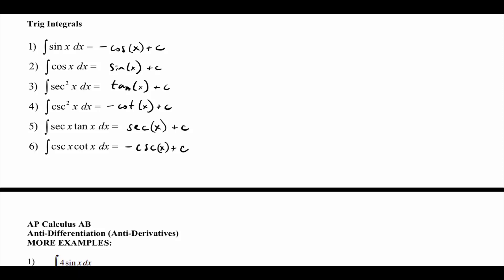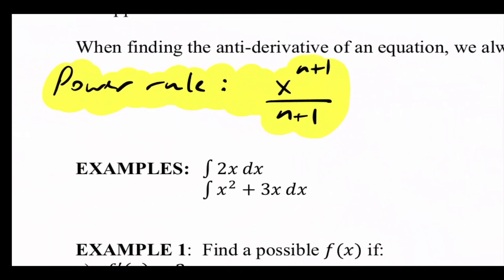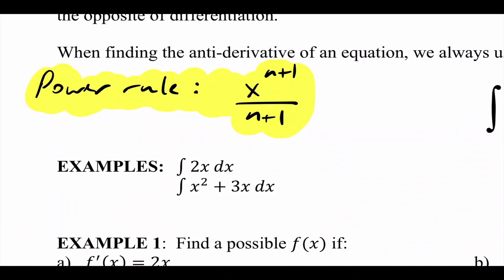So we talked about anti-derivatives — they just go in the opposite direction of a derivative. When we're using the power rule, instead of subtracting a power we add a power. For anti-derivatives, whatever that new power is, that's what you divide by — that's the power rule for anti-derivatives.